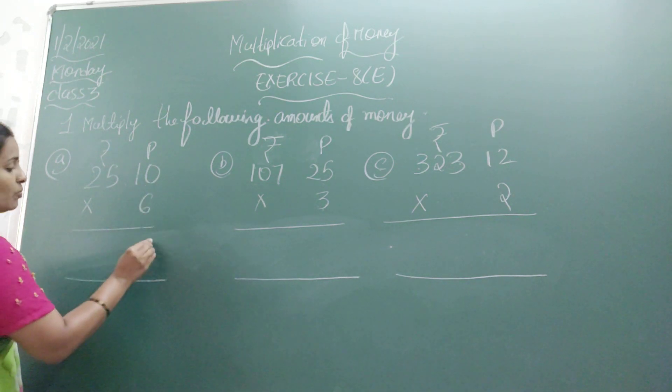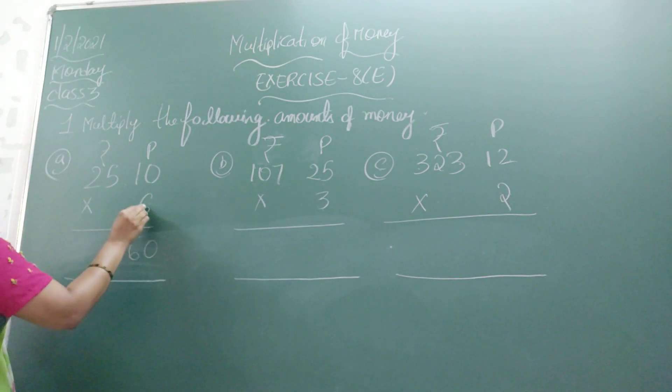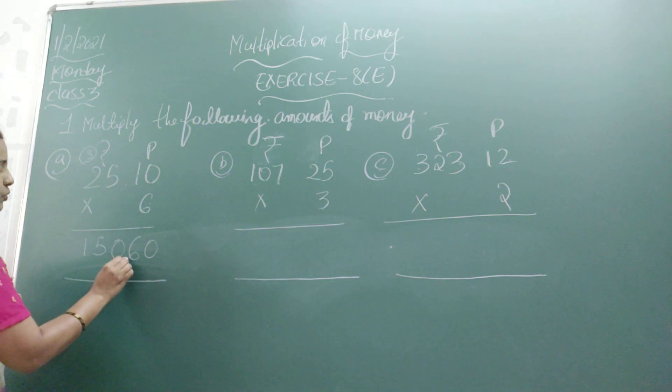6 zeros are 0. 6 ones are 6. 6 fives are 30, write 0 and carry 3. 6 twos are 12, 12 plus 3 is 15. Where will you get the point? After 2 digits you will get the point. So what we can see is 150 rupees and 60 paise.